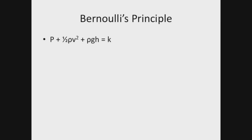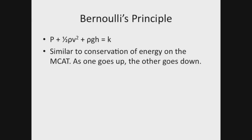Just looking at this equation, two of the terms should look familiar. One-half rho v squared looks like the formula for kinetic energy, and rho g h looks like the formula for potential energy. Combined with the fact that the equation equals a constant, Bernoulli's is essentially an expression of conservation of energy. On the MCAT, one of these three terms won't change — usually rho g h — so you can just ignore it, which makes things nice and easy.